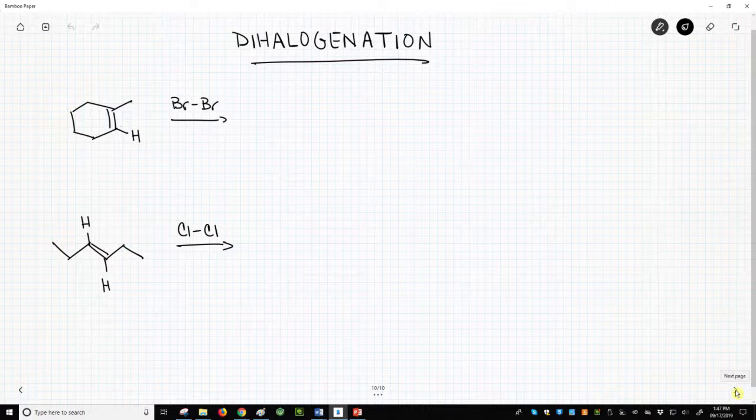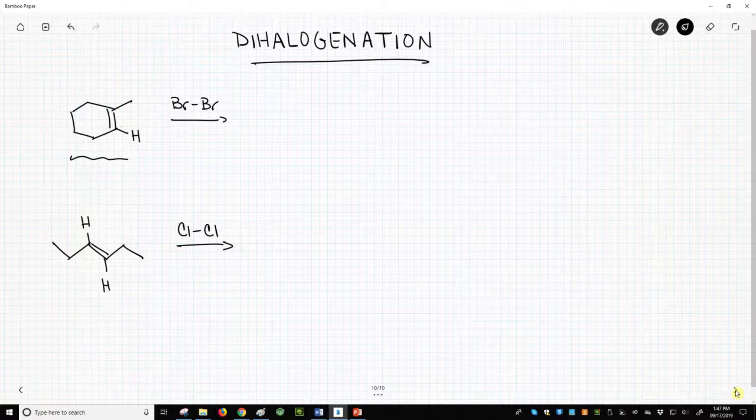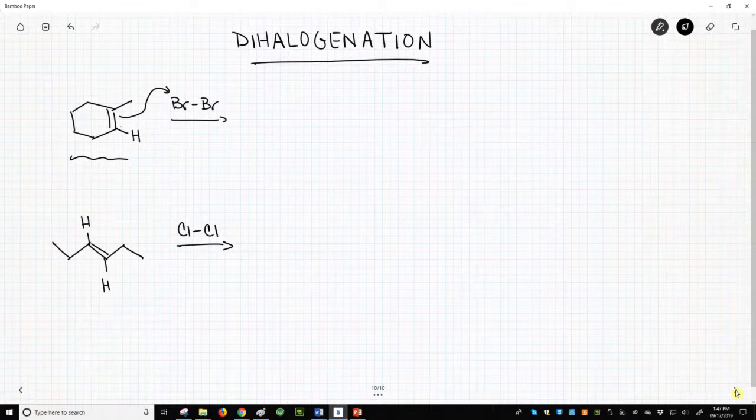Here are our reactions. In the top reaction, we have methylcyclohexene reacting with Br2. The mechanism begins with the weakly nucleophilic alkene attacking the strongly electrophilic Br2.